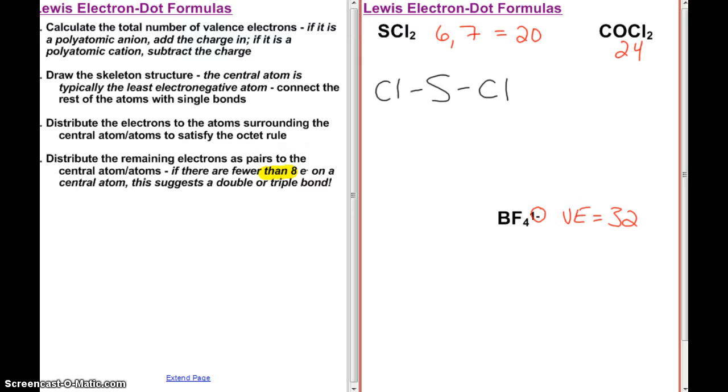All right, now I want to distribute the electrons to the atoms surrounding the central atom to satisfy the octet rule. So chlorine here, there's 2 electrons in that shared bond, so it needs 6 more. 1, 2, 3, 4, 5, 6. Same for the other chlorine. And now, each chlorine believes it has 8 valence electrons. So the octet rule is satisfied.